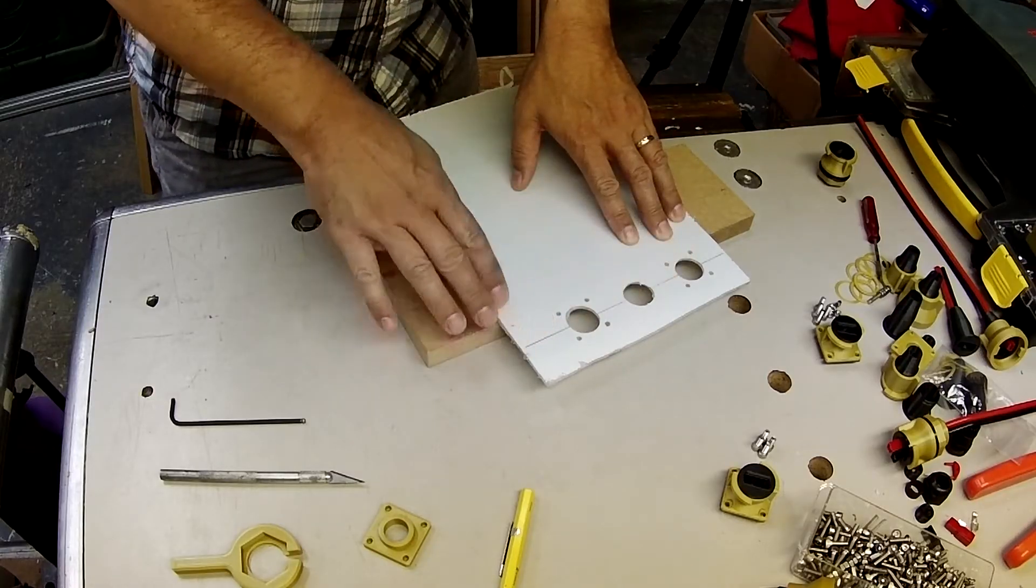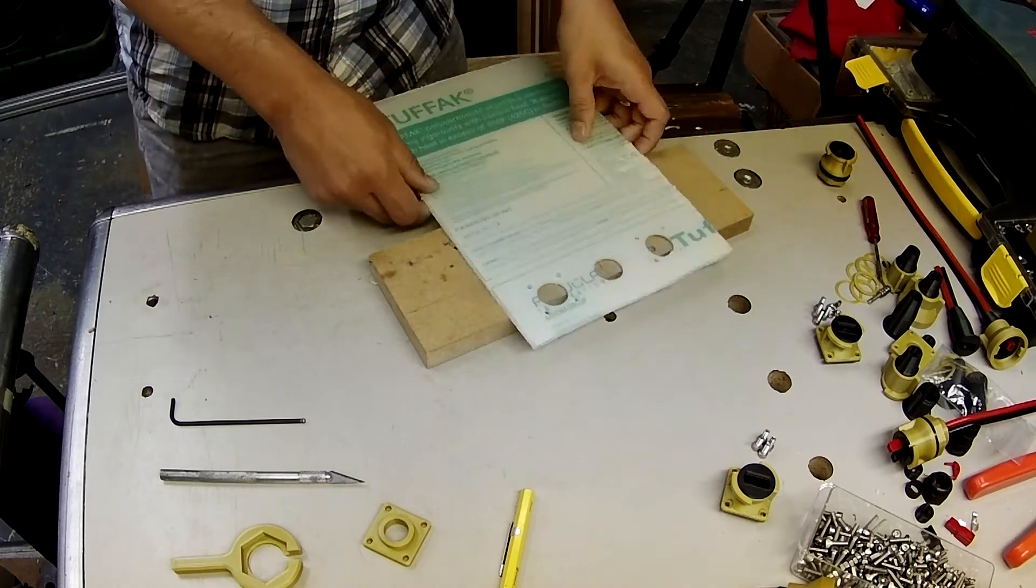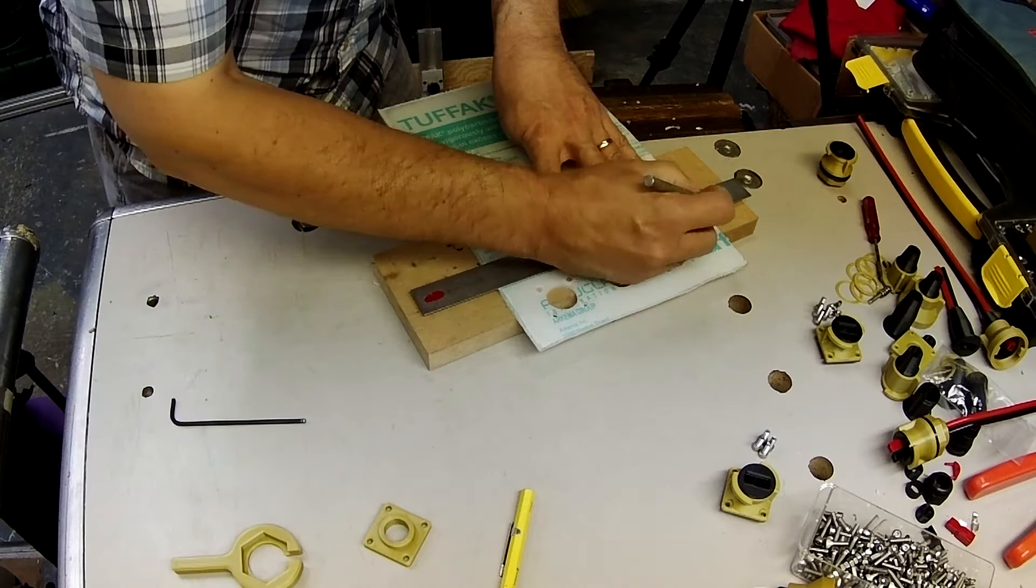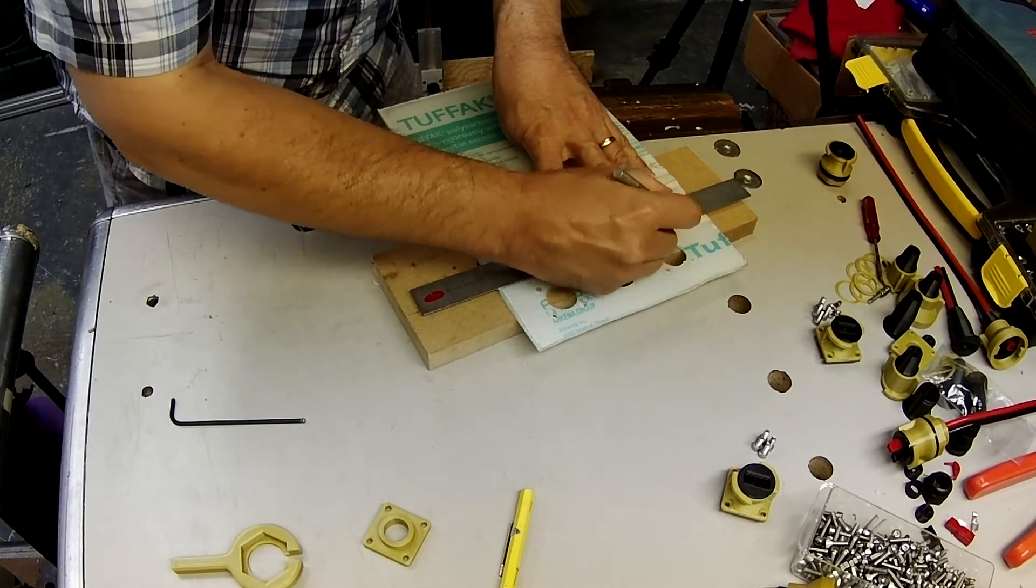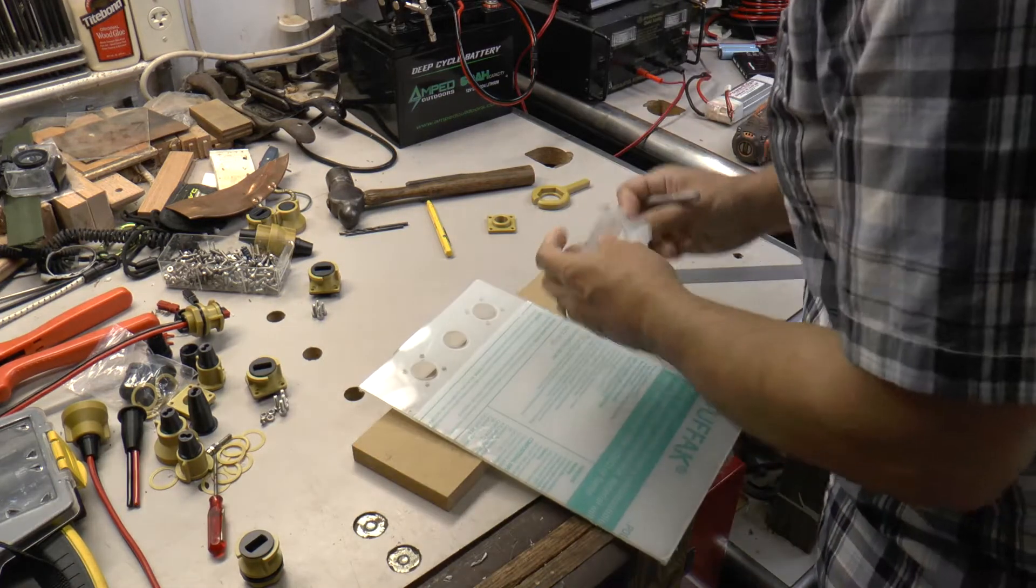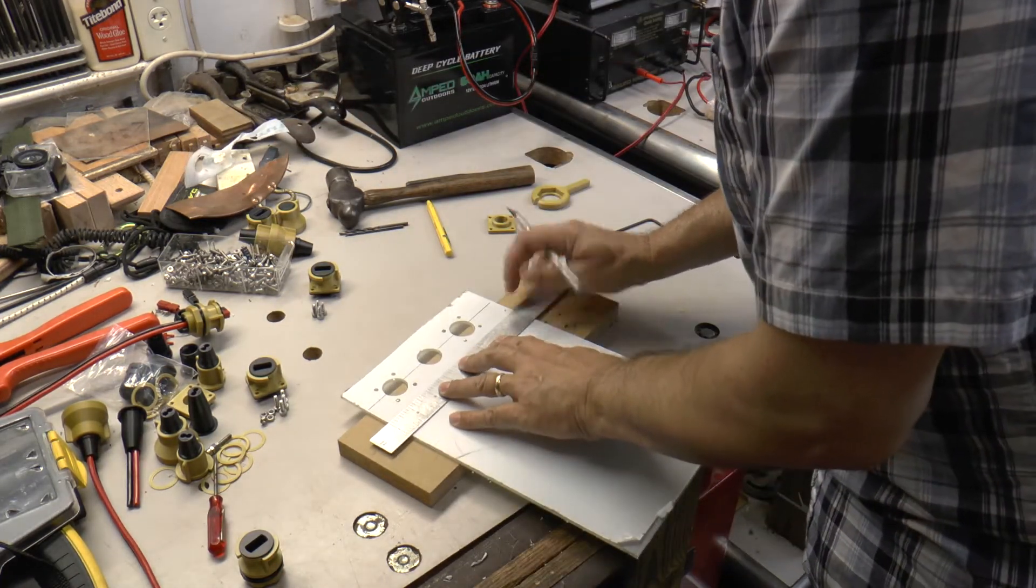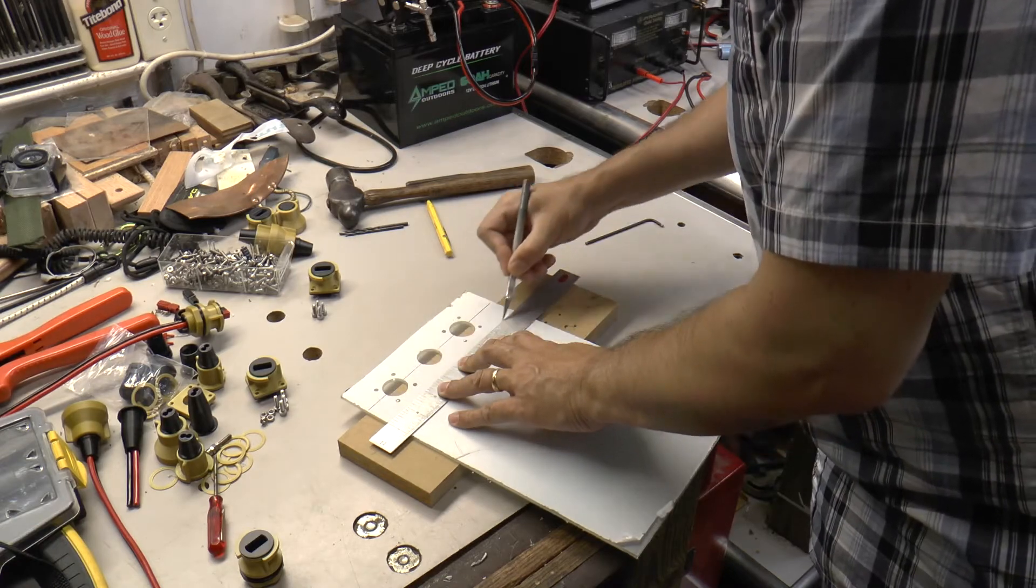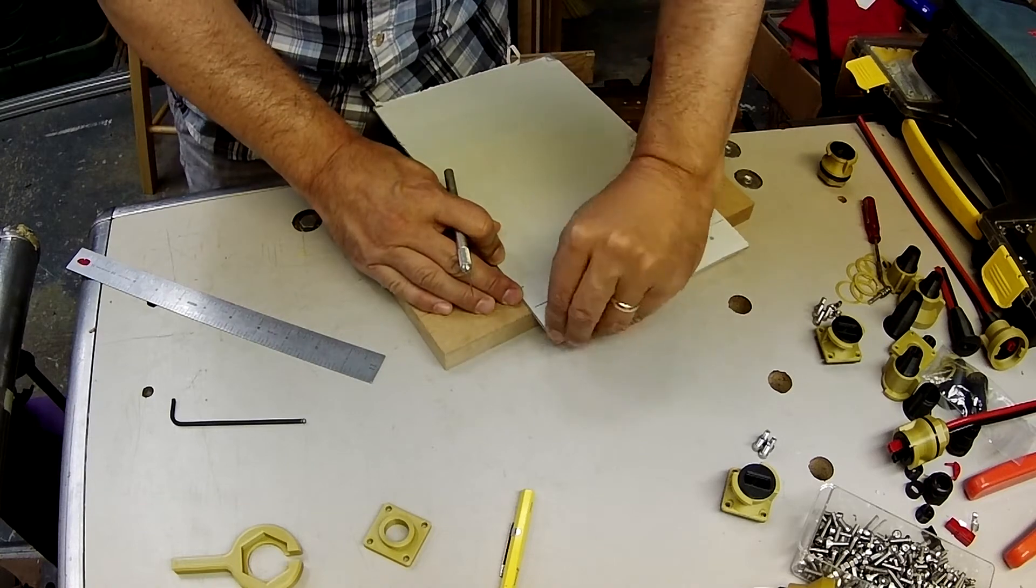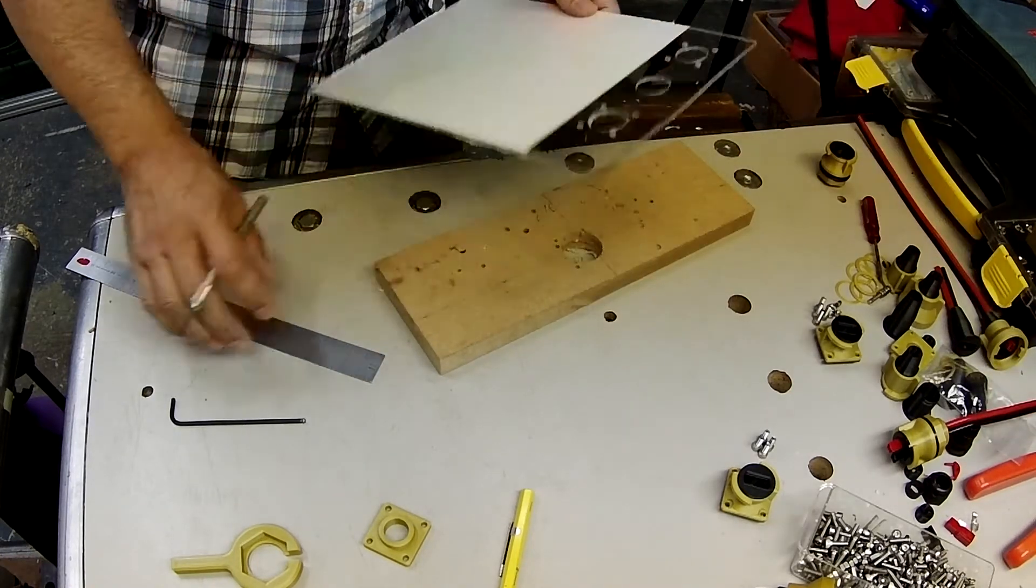Now that these holes are in the panel, we can install the connectors. But before that, I'm going to take off this plastic coating so that you can see a little bit better. Peels right off. Now that we're done using it to mark out the holes.